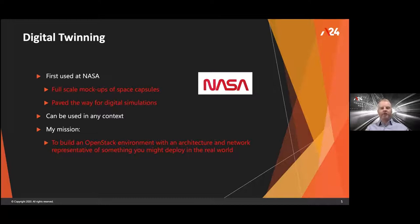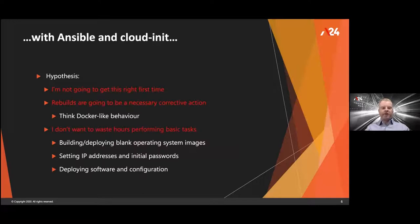Having discovered this concept, and wanting to learn OpenStack properly from an architectural point of view — not just a single all-in-one node — I decided to build my own digital twin. I only had one blade, but I wanted to build something that was an accurate representation of a production OpenStack deployment; at least small enough to say it has high availability and I can take nodes out of service and it keeps going. I've learned the hard way that I'm not an expert and I'm probably not going to get it right first time, and there are times when it's actually easier to rebuild than to pick through configurations to fix things.